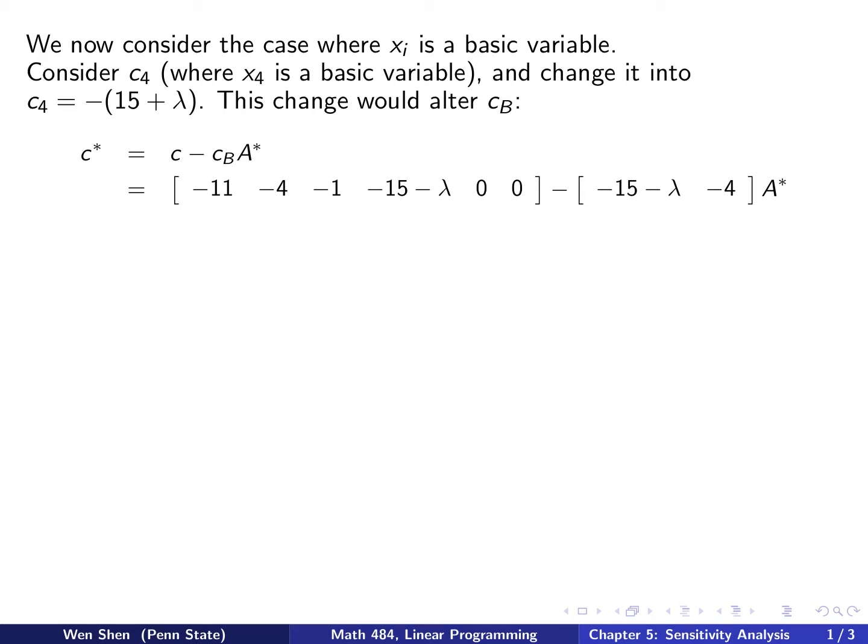In the previous example, we know that x4 is a basic variable. So let's choose c4 and let's say we want to make some change. Let's say c4 initially is negative 15 and we're going to change by the amount lambda. So c4 is now negative 15 plus lambda. With this change, we would change also this vector cb.